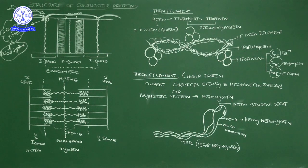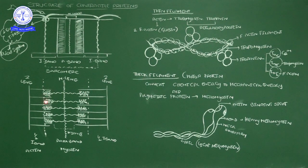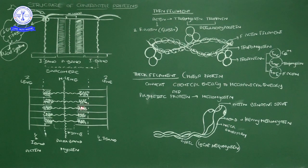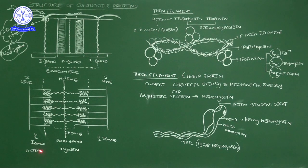During contraction, the actin filaments move toward the M-line. The actin filaments slide in between the myosin filaments. Therefore, the H-zone will disappear during muscle contraction. Now, the I-band is the actin part and the dark band is the myosin part — that is the general diagram. Now we want to know the individual structural proteins of the muscle — what protein the thin filament is made of and what the thick filament is made of. The I-band is also called thin and the dark band, thick.